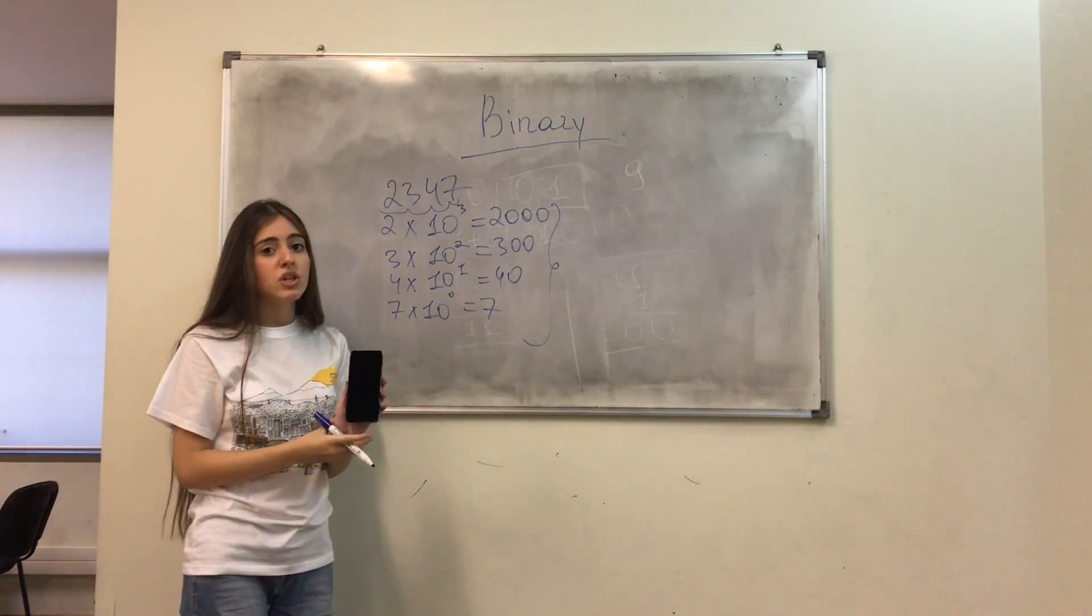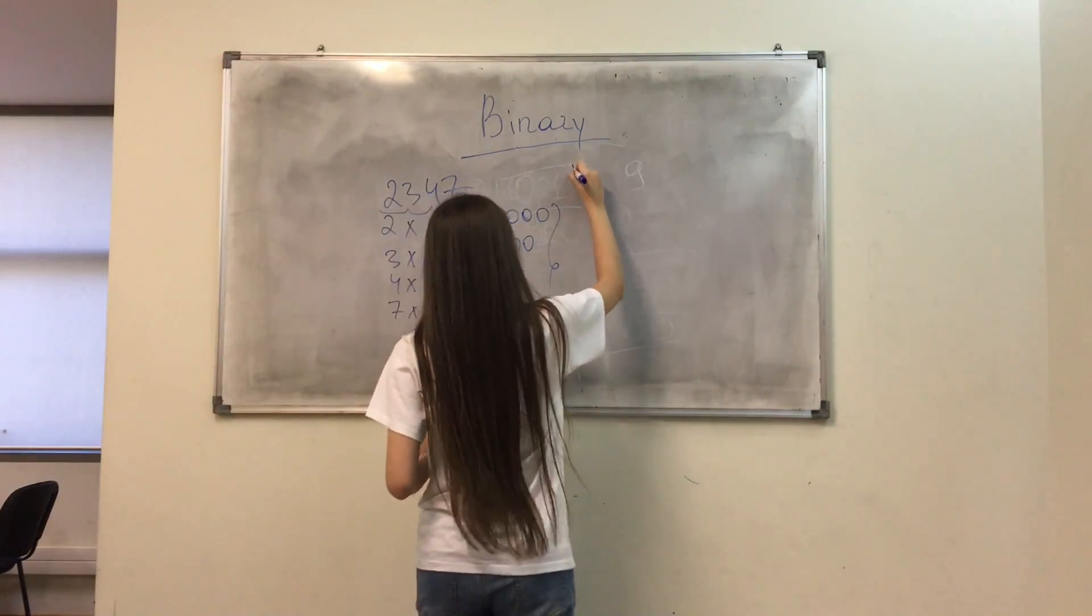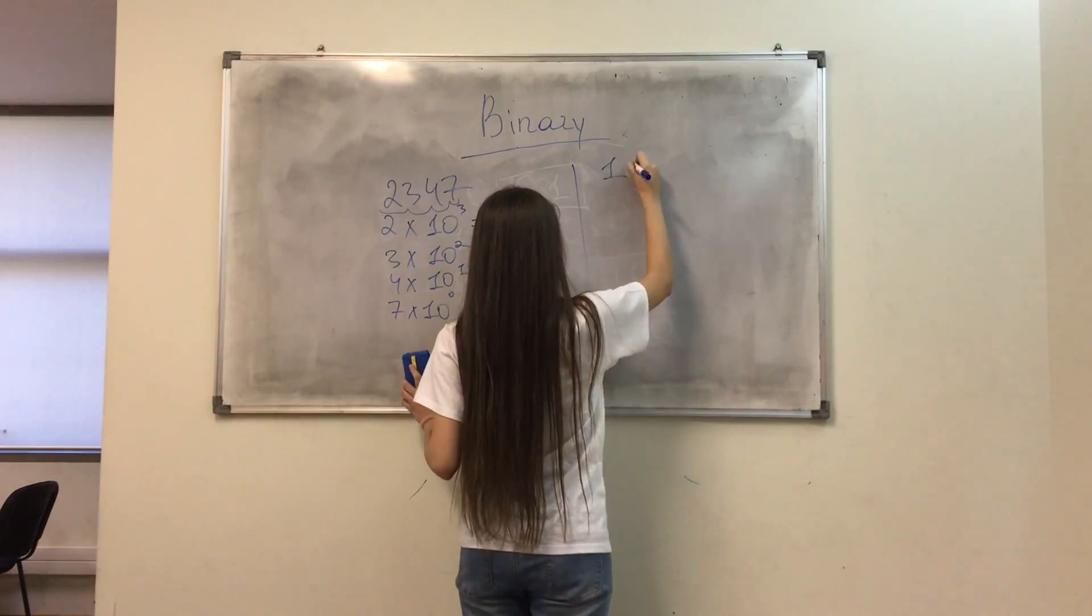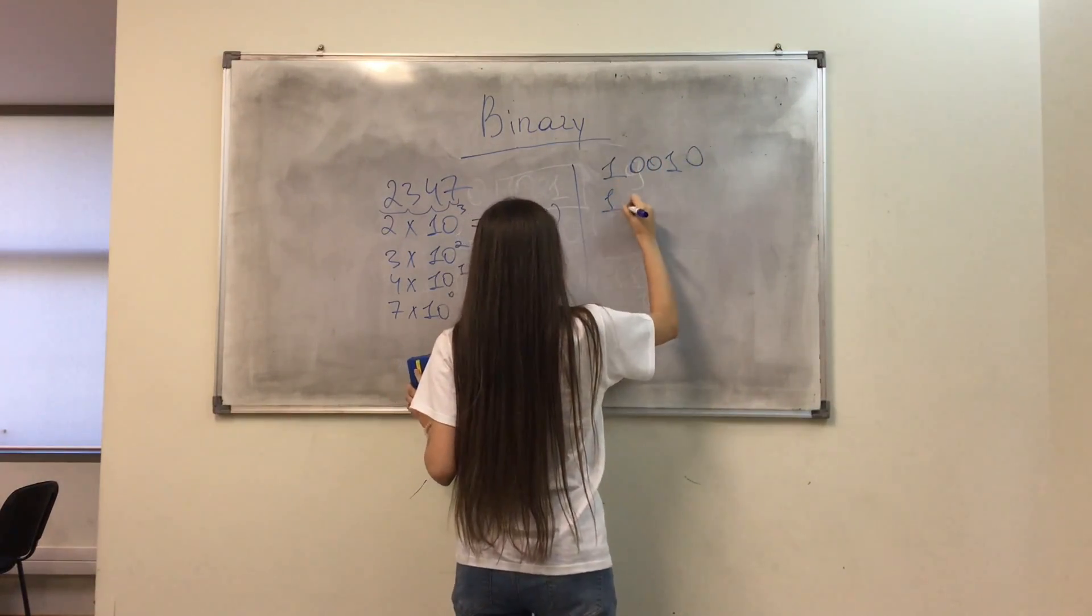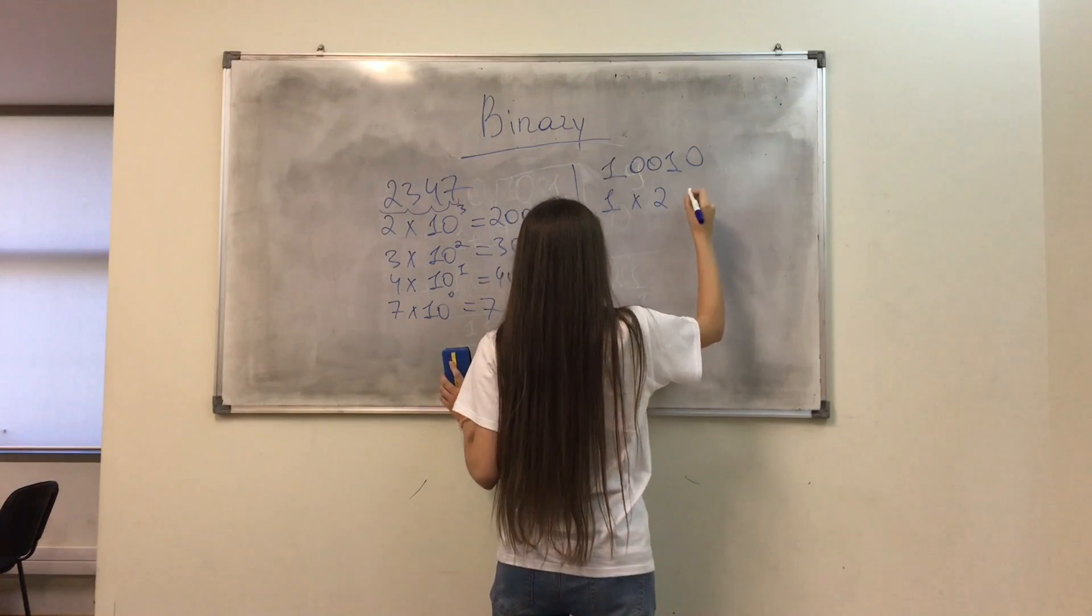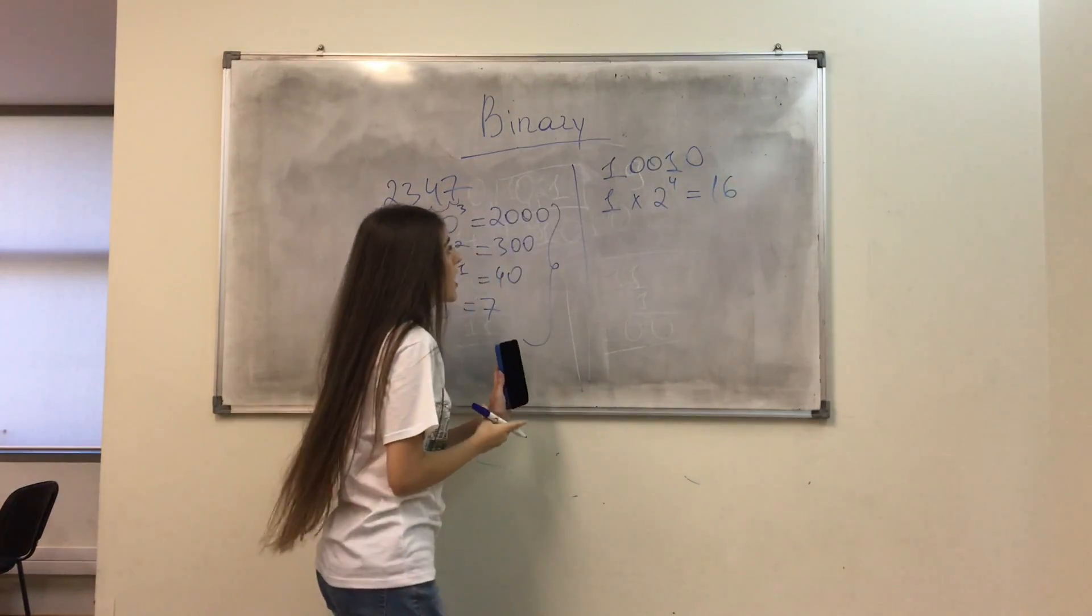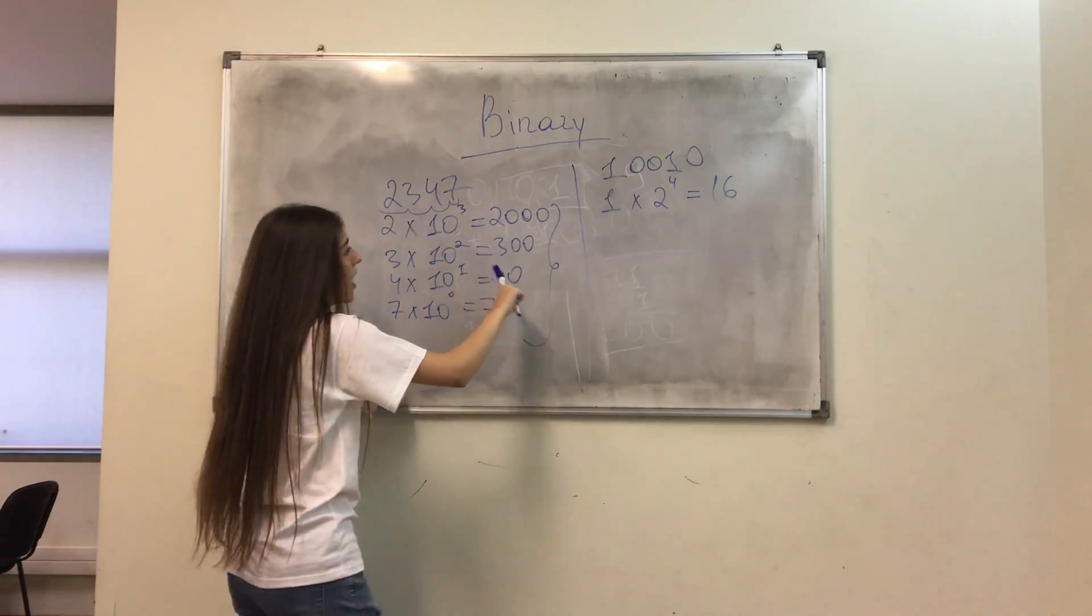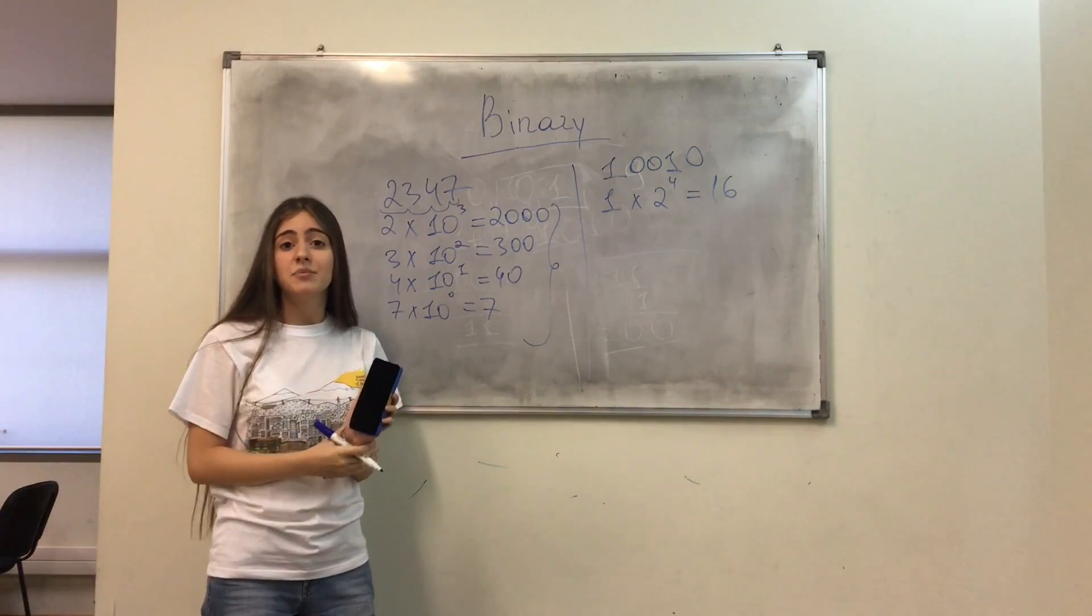With the same approach, let's analyze a binary number. We get 1 times 2 power of 4, which is 16. So instead of writing 10, I'm writing 2, because the binary system has the base of 2.